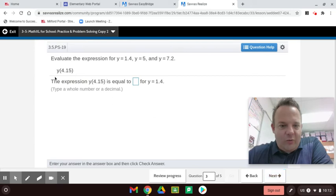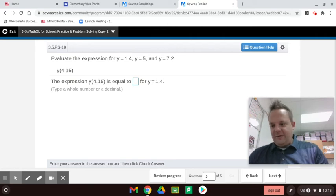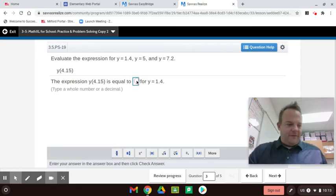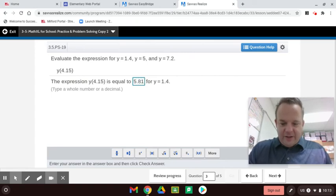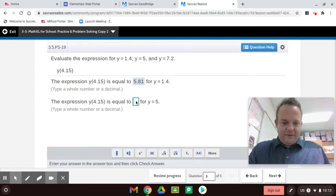Now, the y right next to the parentheses means multiply. So we're going to multiply 1.4 times 4.15. So you just go 1.4 times 4.15, and I got 5.81, 5 and 81 hundredths. And now we'll try it with 5. 5 times 4.15, and we'll get 20.75.